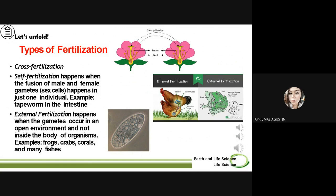Self-fertilization occurs in bisexual organisms, including most flowering plants, numerous protozoans, and many invertebrates. Autogamy — the production of gametes by the division of a single parent cell — is frequently found in unicellular organisms such as the protozoan Paramecium. The third type of fertilization is external fertilization, which happens when gametes occur in an open environment and not inside the body of organisms. Examples include frogs, crabs, corals, and many fishes.